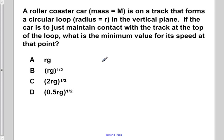A rollercoaster car, mass equal to big M, is on a track that forms a circular loop of radius R in the vertical plane. If the car is to just maintain contact with the track at the top of the loop, what is the minimum value for its speed at that point?